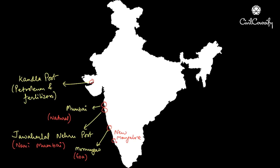Then we have the New Mangalore port in Karnataka, which caters to the needs of the export of iron ore and iron concentrates. It also handles fertilizers, petroleum products, edible oils, coffee, tea, wood pulp, yarn, granite stones, molasses, etc.